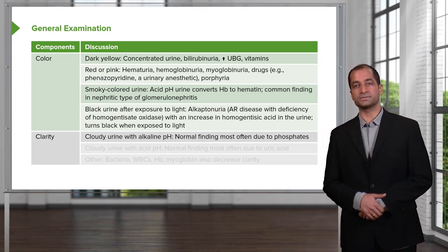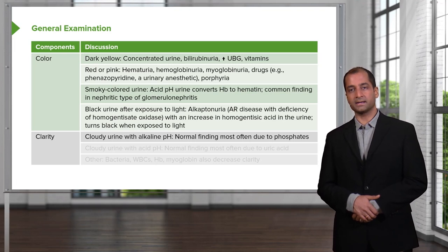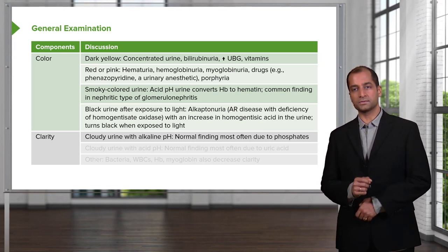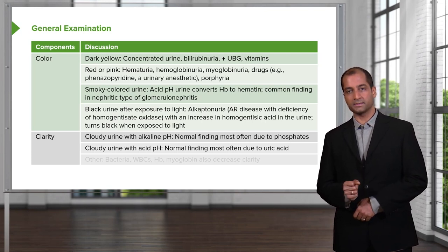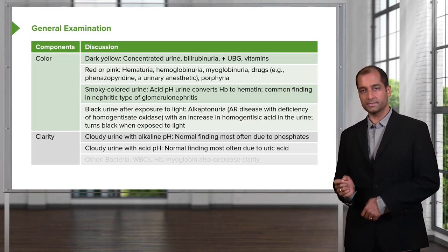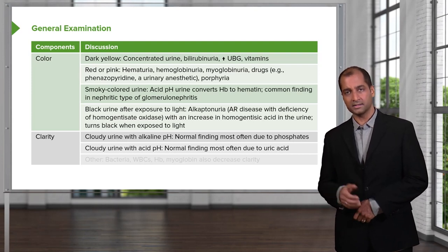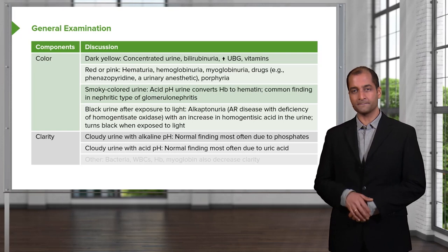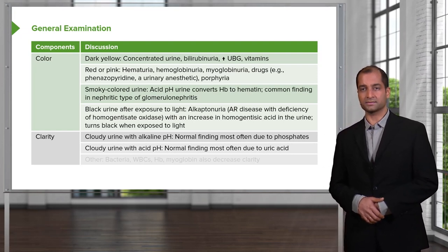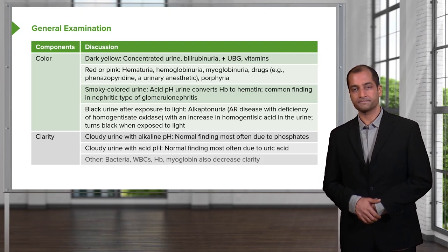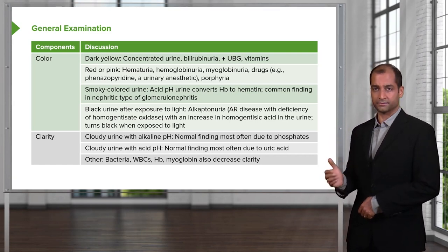We'll talk about clarity. One major component we just completed is color. What about clarity? What if it was cloudy urine? This is alkaline pH. Normal finding most often due to phosphates. What if it was cloudy urine with acid pH? Normal finding most often due to uric acid. If it's a little bit more acidic, below 4, then you start thinking about uric acid. If it's on the higher side, maybe 5.5 to 6, then you're thinking along the lines of phosphate. Then you have others: bacteria, WBCs.